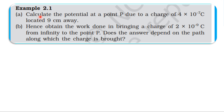From the NCERT textbook, from the topic electrostatics potential and capacitance, we will learn example 2.1. First sub-part: calculate the potential at a point P due to a charge of 4×10⁻⁷ coulomb located 9 centimeters away. Second sub-part: obtain the work done in bringing a charge of 2×10⁻⁹ coulomb from infinity to the point P. Does the answer depend on the path along which the charge is brought?